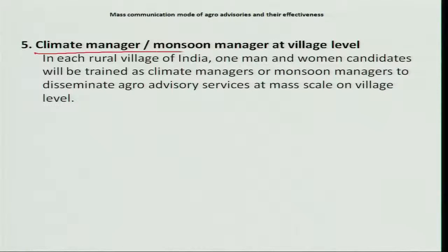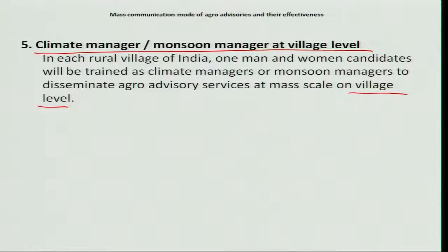The fifth future plan is the climate manager or monsoon manager at the village level. In each rural village of India, one man and one woman will be trained as climate managers or monsoon managers to disseminate agro-advisory services at a mass scale at the village level. This concludes the discussion on the mass communication mode of agro-advisories and their effectiveness. In the next class, we will discuss weather forecast and agro-advisory services from different websites. Thank you.